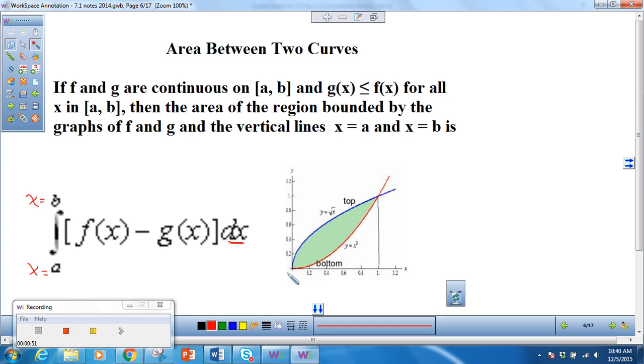Okay, so in this case, A would be zero and B would be one. So we would integrate from zero to one. And it would be the curve on top, in this case, the square root of X minus the curve on bottom, Y equals X squared. So it's top minus bottom, DX.